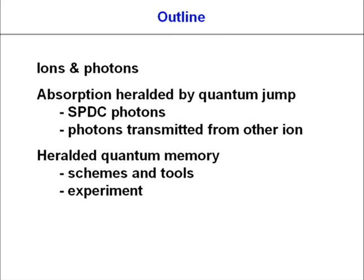The outline of my talk: I'll quickly present the experimental system, then talk about absorption heralded by quantum jumps for two types of single photons — photons from a spontaneous parametric down-conversion source and photons from another ion. Then I'll talk about the heralded quantum memory: the controlled absorption of a photon of arbitrary polarization, putting this arbitrary photon state into the atom, and ensuring the atom has a corresponding state after absorption.